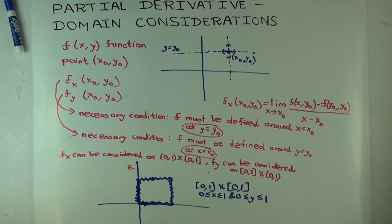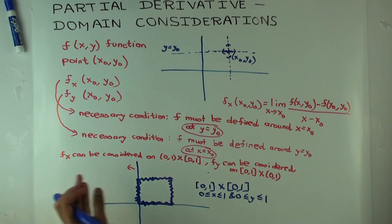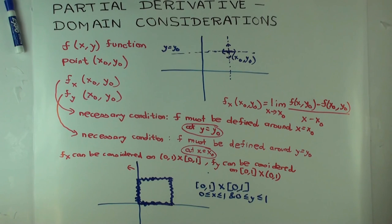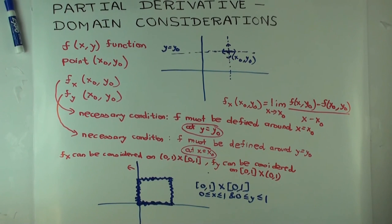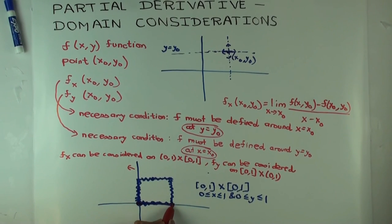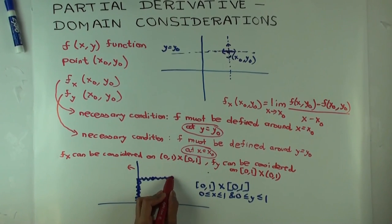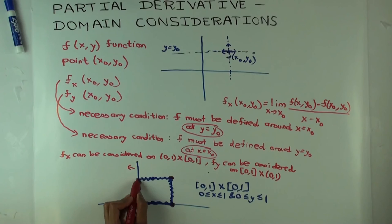So what are the points where we cannot consider either f sub x or f sub y? Those are the four vertices — the corner points of the square — where we cannot consider either partial.